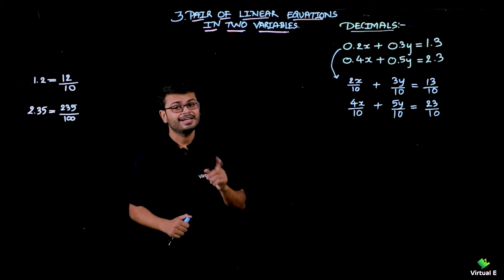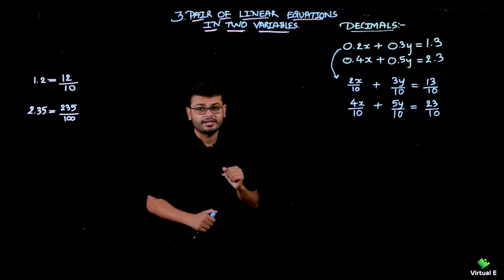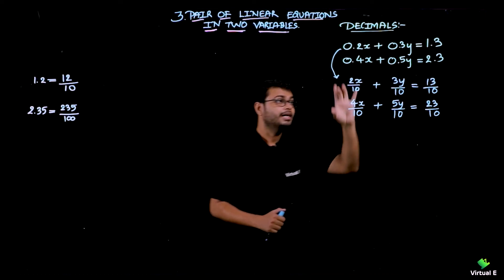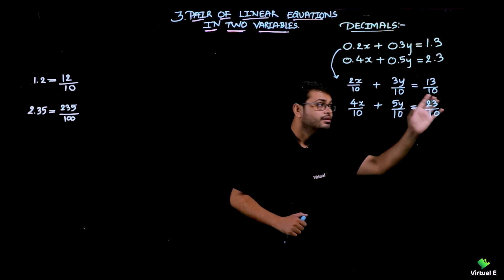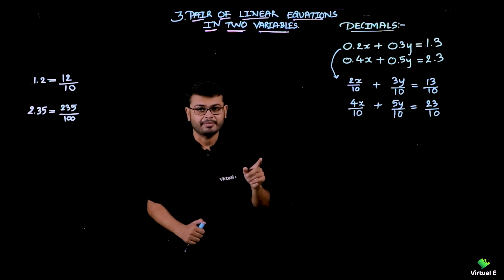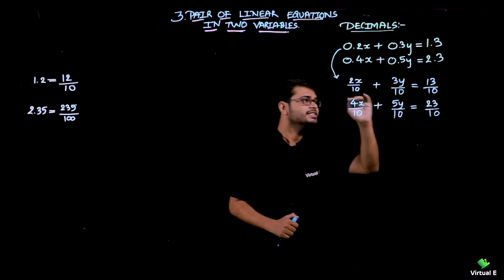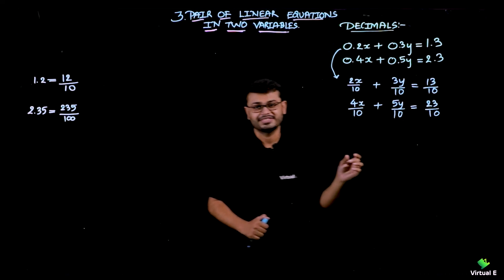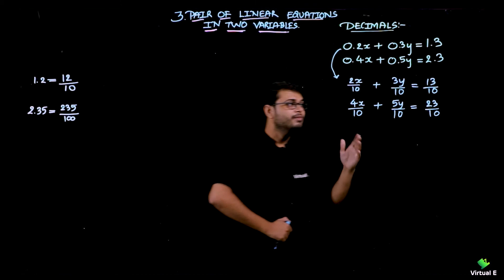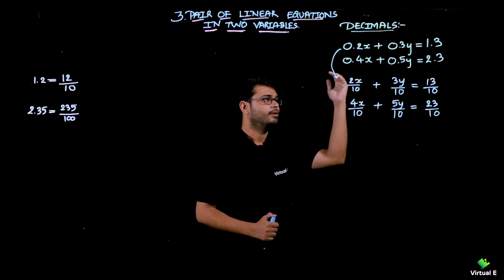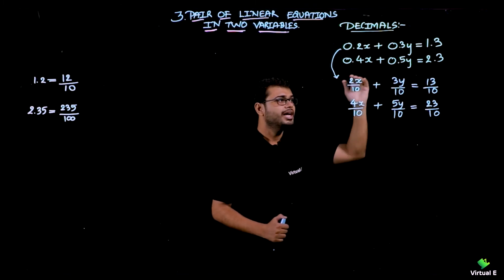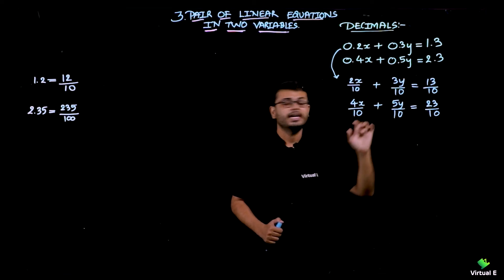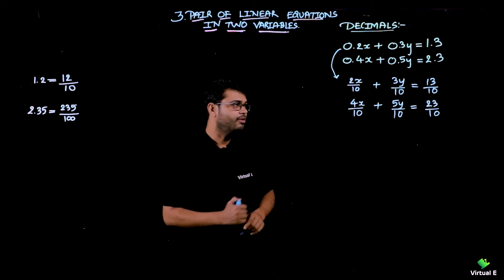So how do we remove the fractions? We learned this in the previous section. To remove the fractions we multiply each and every term with the help of the LCM. The denominator is common in both equations, which is 10. So I will multiply both equations by 10 for each and every term, and I will get the equations in whole number form.